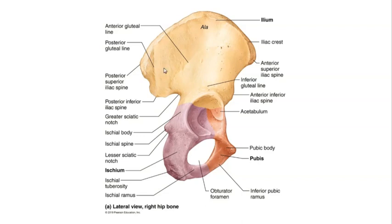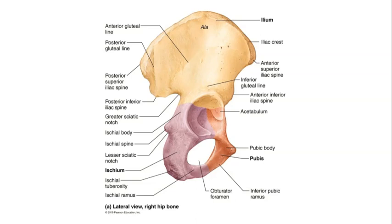Turning our attention to the ilium, there are four structures to take note of. The first is the iliac crest, which is a structure we can feel when we put our hands on our hips. The iliac crest ends anteriorly at the anterior superior iliac spine and ends posteriorly at the posterior superior iliac spine. Inferior to the posterior superior iliac spine is a very deep indentation called the greater sciatic notch, where the large sciatic nerve passes by the hip bone down to the thigh to innervate muscles located within the thigh.